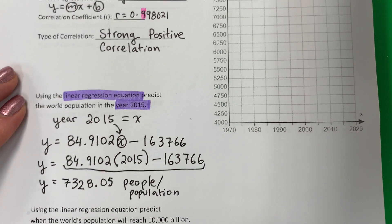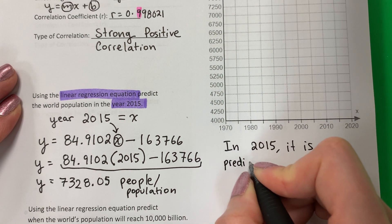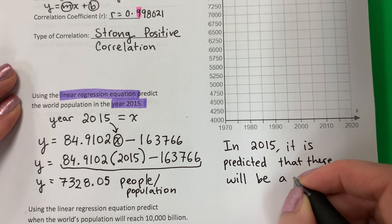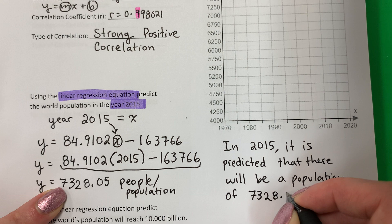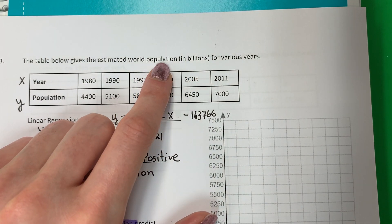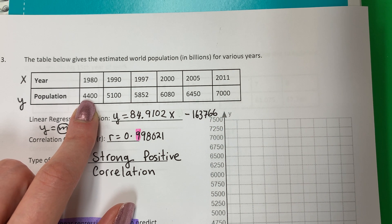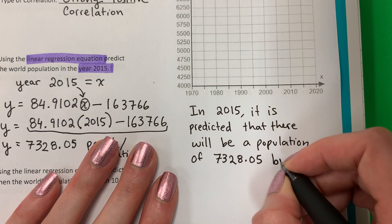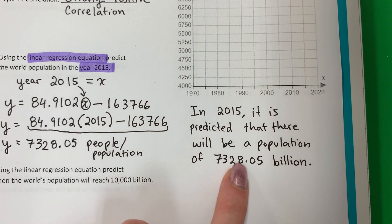Let's write a sentence. Vamos a escribir una oración. In 2015, it is predicted that there will be a population of, let's write this number. We're not done. Because look. Porque mira. They said population is in billions. Populación es en billones. So it's not 4,400 people. No es 4,400 personas. It's 4,400 billion people. Es 4,400 billones de personas. So I'm going to just put here billions or billion. So in 2015, the prediction is this many people in billions.